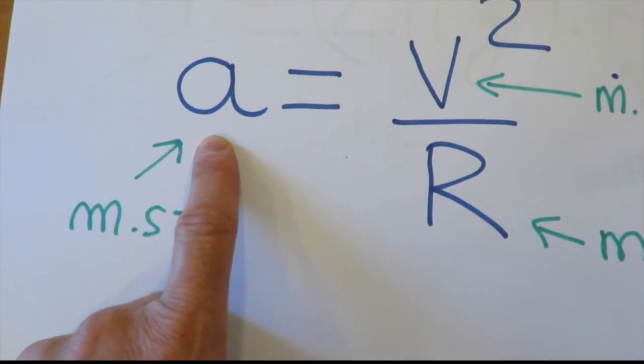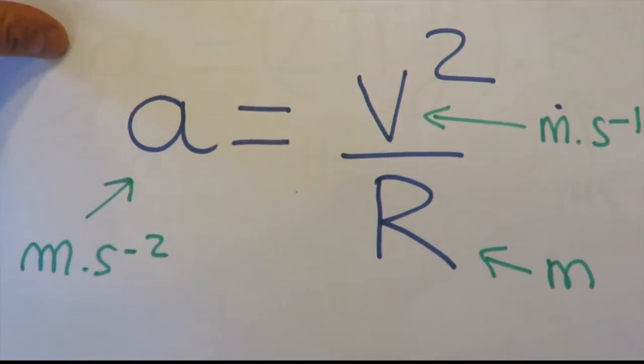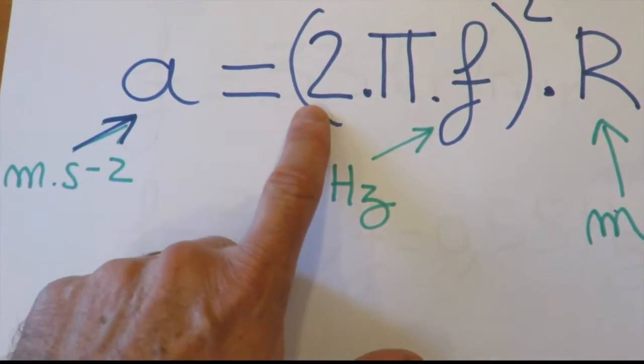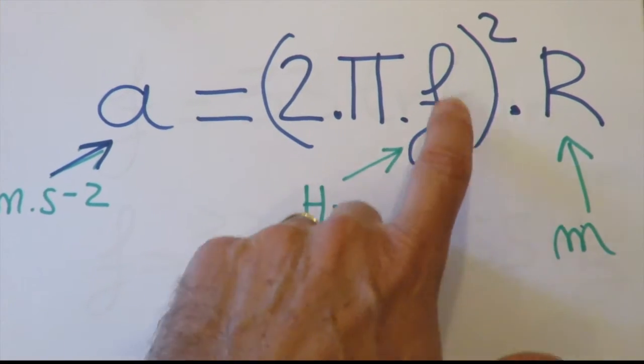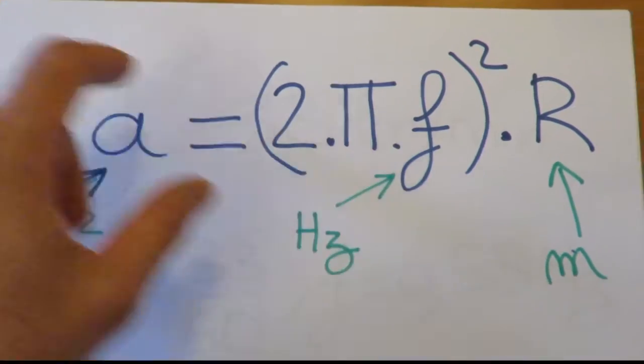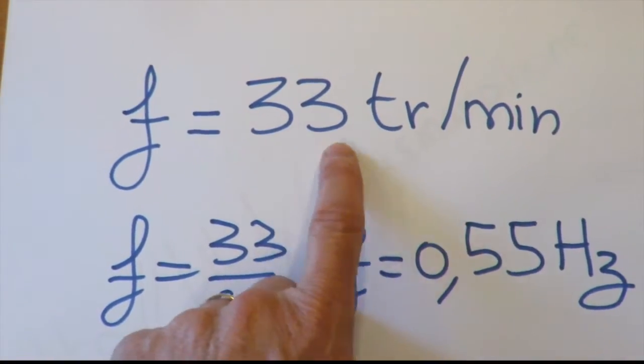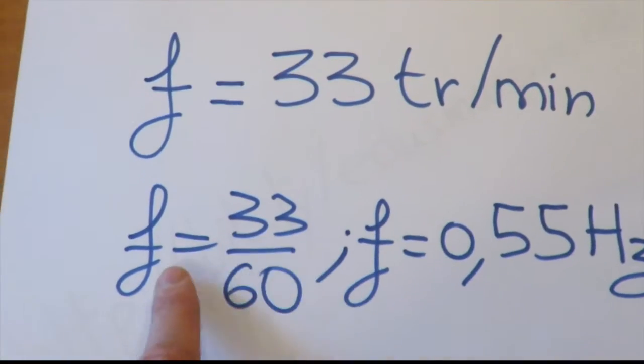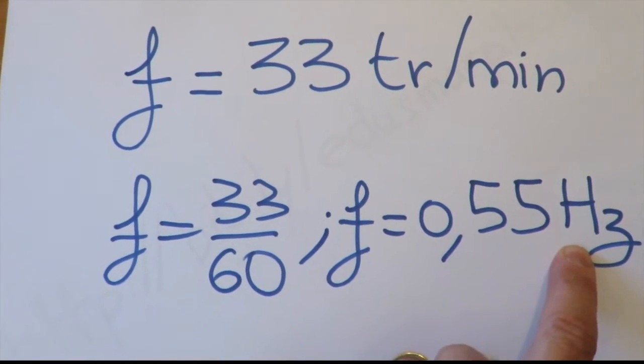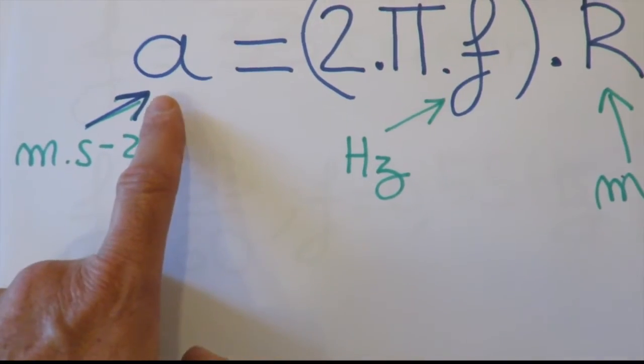So it means also that the acceleration is equal to 2 times pi times F, all of that is square, times R. We know F because F is the speed of rotation of the smartphone. It's 33 turns per minute. So if you divide by 60, you have F is 0.55 Hertz. And we will measure A with the smartphone. I will show you that now.